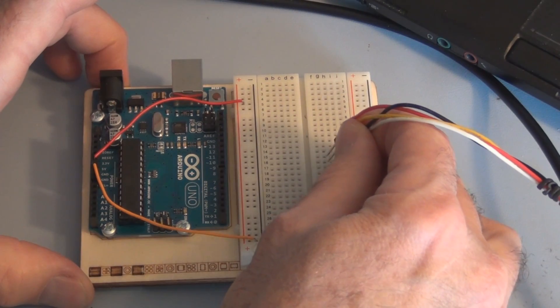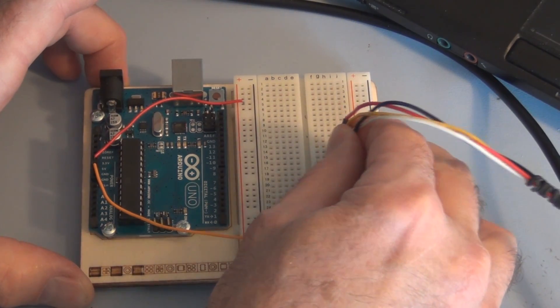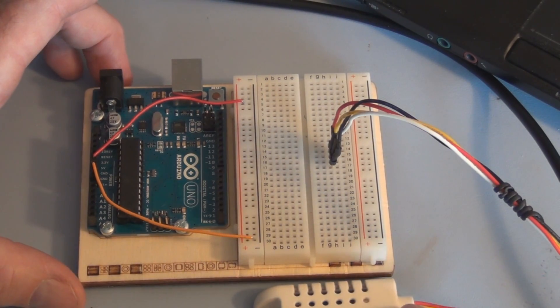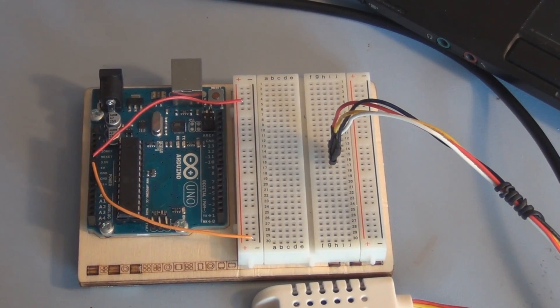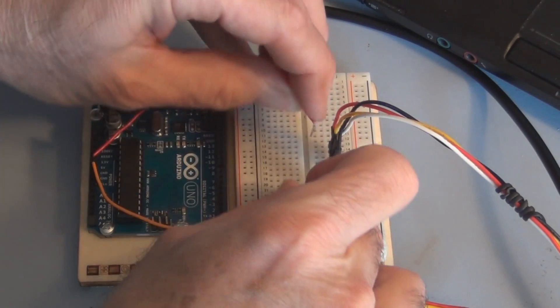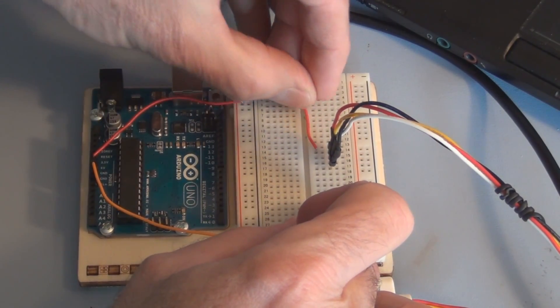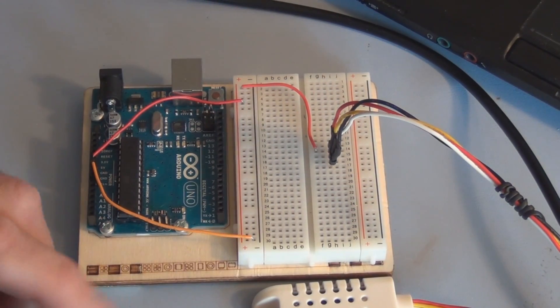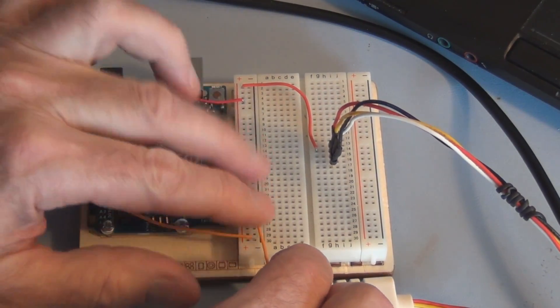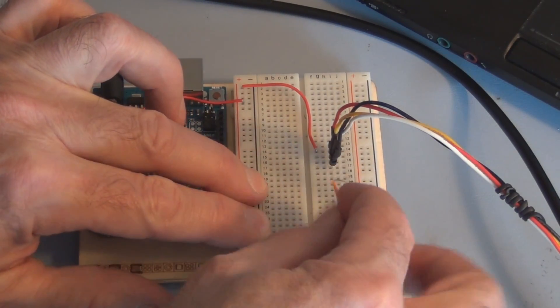So I'll plug the sensor in to the breadboard right there. And we have 5 volts. Connect that there. Get ground to the other side.